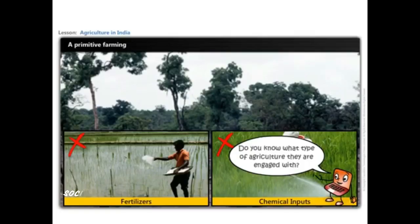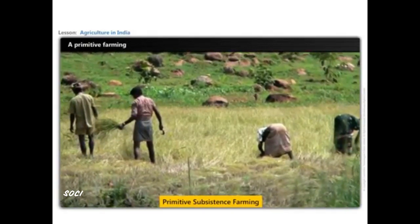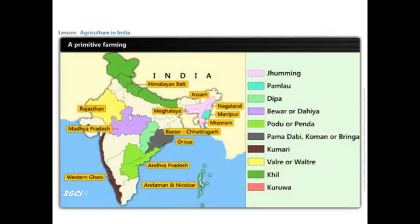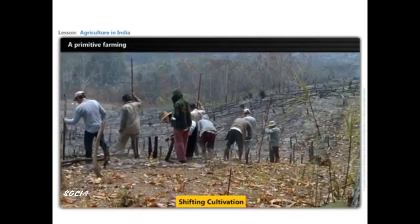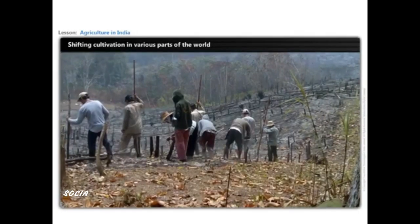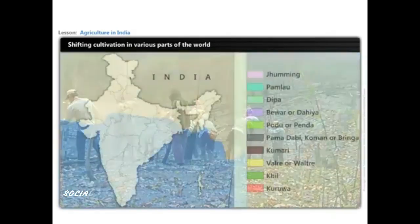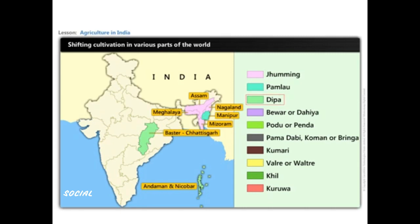This is a type of primitive subsistence farming known by different names in different parts of our country. It is also known as shifting cultivation because farmers move from one place to another. It is known as Jhuming in Assam, Mizoram, Meghalaya, and Nagaland; Pamlao in Manipur; Dipa in Bastar district of Chhattisgarh and Andaman and Nicobar; and Bewar or Dahia in Madhya Pradesh.